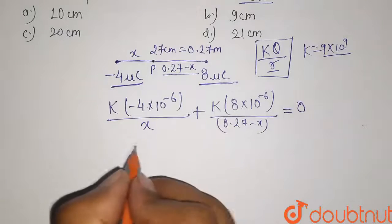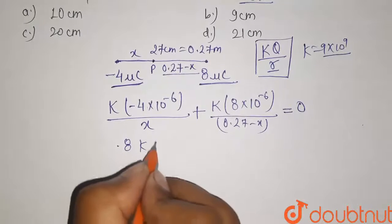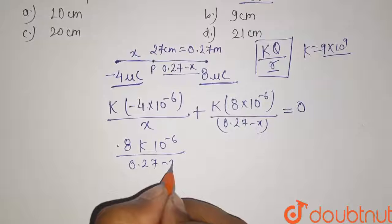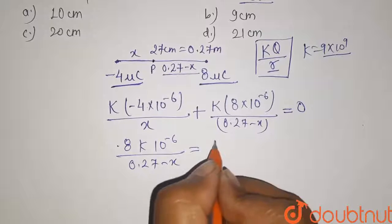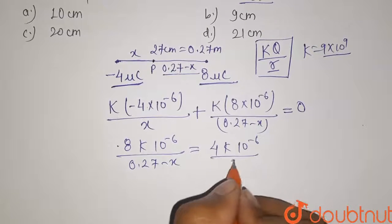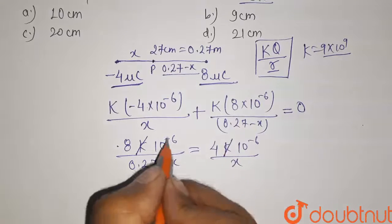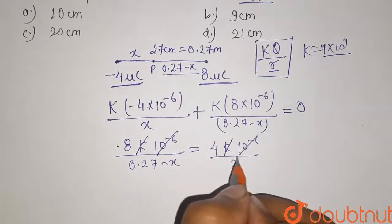Now let us solve this. So we have 8k into 10 to the power minus 6 divided by 0.27 minus x is equals to 4k into 10 to the power minus 6 divided by x. Now here k and k will get cancelled out, 10 to the power minus 6 will cancel out.